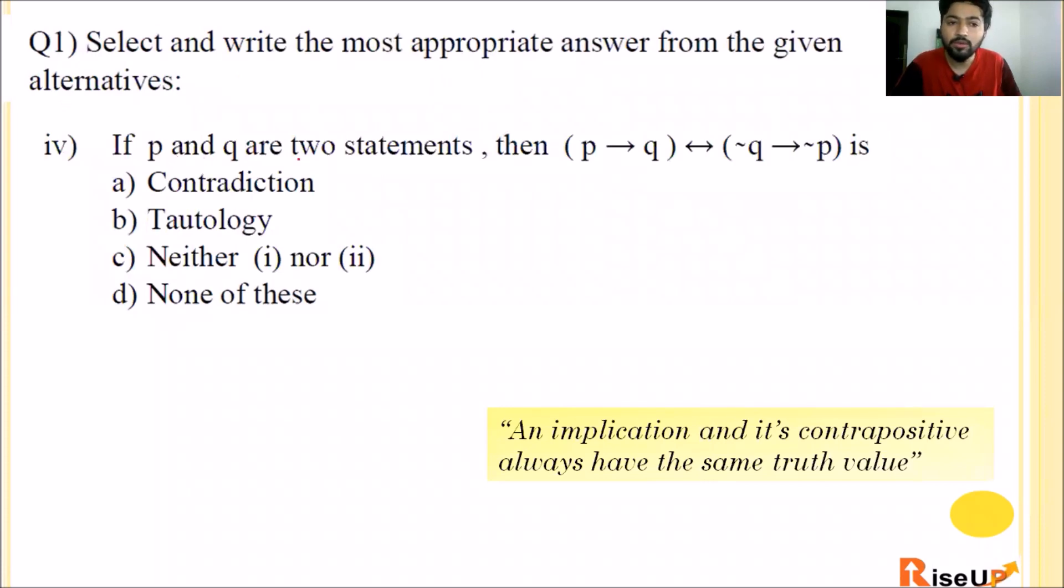Fourth question. If P and Q are two statements then P implication Q double implication negation Q implication negation P is. Always remember, an implication and its contrapositive always have the same truth value. Both are logically equivalent. So both suppose T T, or both F F. Both will be the same always. Between them is double implication. The rule for double implication is when both statements are T T or both statements are F F, only then it is true. So answer is T.